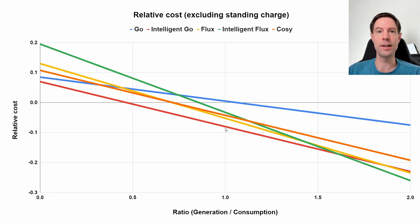So let's say your consumption was also 500 kilowatt hours, then you would get a value of 1 because 500 divided by 500 is equal to 1. You would then read up along this line here where the ratio is 1 and you would find the tariff, the line that is the lowest of all of the ones on this chart. So in this particular example with a generation to consumption ratio of 1, you would say that Intelligent Go is the most cost effective, the best tariff for you with the lowest relative cost. The next best would be regular Flux, the next best would be Cozy, and then the next best would be Intelligent Flux with regular Go being the least cost effective with the highest relative cost.